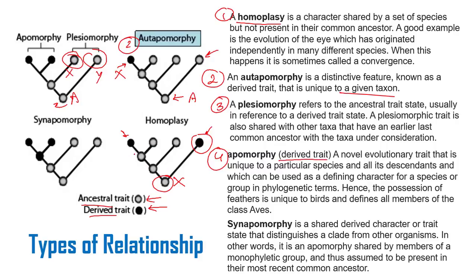Apomorphy means a derived trait — a novel evolutionary trait unique to a particular species and all its descendants — which can be used as a defining character for a species or group. So apomorphy means a new feature compared with the ancestral state, but that derived trait is shared by more than one taxon. Two different individuals coming from a branch point share this derived character, so we call it an apomorphic character.